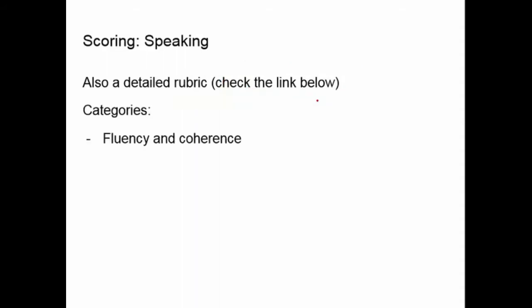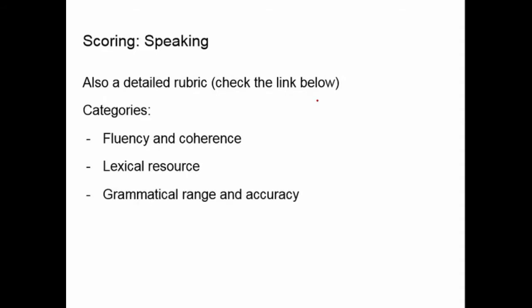The categories for speaking are similar to writing. They want fluency and coherence — fluency means you don't have a lot of long pauses and your ideas flow easily without struggling to come up with words. Coherence means your ideas stick together. Lexical resource is the same as with writing — how well and how accurately do you use vocabulary. Grammatical range and accuracy is about how varied your grammar structures are and whether you use them correctly.